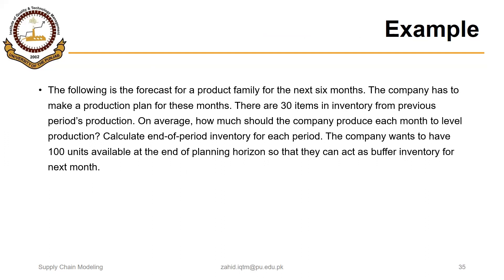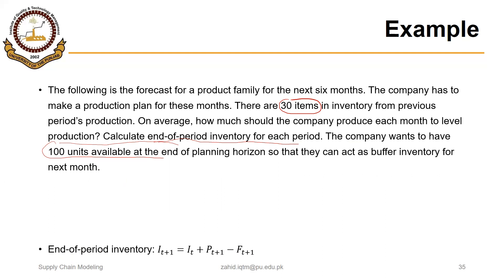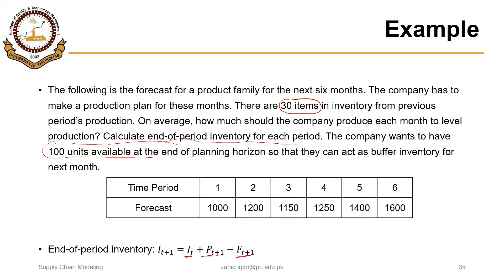Now let's solve an example. The following is the forecast for a product family for the next six months and the company has to make a production plan. There are 30 items in inventory from the previous period's production. The company wants to have 100 units available at the end of the planning horizon as buffer inventory for the next period. Planned ending inventory equals previous month's ending inventory plus planned production minus forecast for the current month.